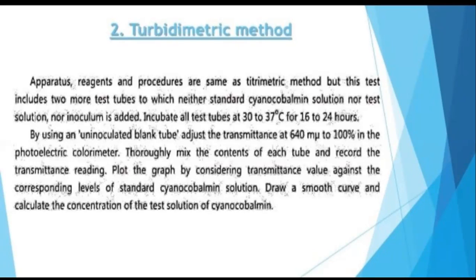Using the blank tubes, adjust the transmittance to 100% at 614 nanometers in a photoelectric colorimeter. Then measure the contents of each tube and record the transmittance readings. Plot a graph of transmittance values against the corresponding standard concentration values to determine the vitamin content.